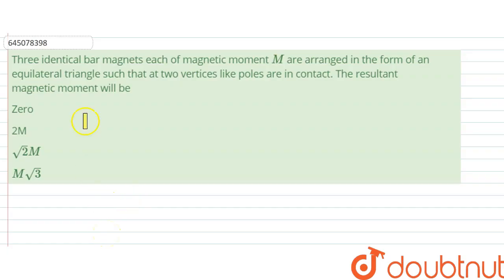Hello, we are given the question and the question says three identical bar magnets each of magnetic moment M are arranged in form of an equilateral triangle such that at two vertices, like poles are in contact. So, the resultant magnetic moment will be what?